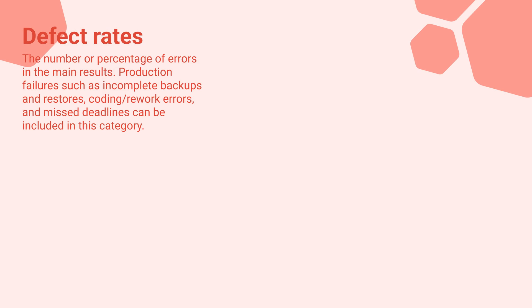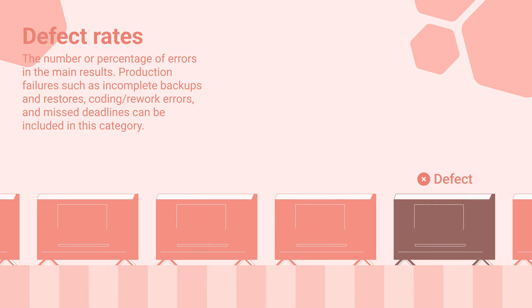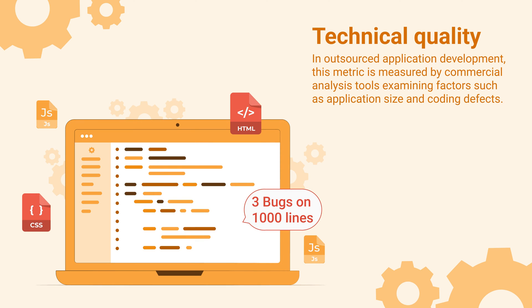Defect rates: the number or percentage of errors in the main results. Production failures such as incomplete backups and restores, coding or rework errors, and missed deadlines can be included in this category. Technical quality: in outsourced application development, this metric is measured by commercial analysis tools examining factors such as application size and coding defects.